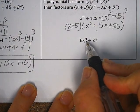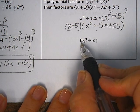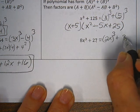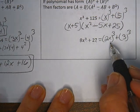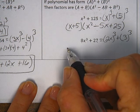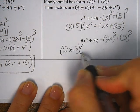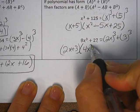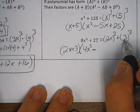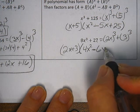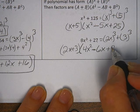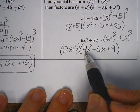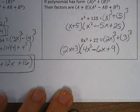Final example. We've got 8x cubed plus 27. You want to be able to recognize that 8 is a perfect cube and 27 is a perfect cube. So we could write that as 2x cubed plus 3 cubed. So my a value is 2x, the b value is 3. We can write this now as 2x plus 3 as the leading factor. The second factor comes from a squared — so 2x squared, and 2 squared is 4, so 4x squared — minus a times b, so 2x times 3 is 6x, plus 3 squared which is 9. So my factors of 8x cubed plus 27 are 2x plus 3 multiplied by 4x squared minus 6x plus 9. Hope that helps.